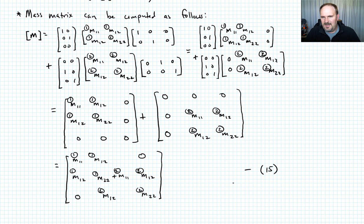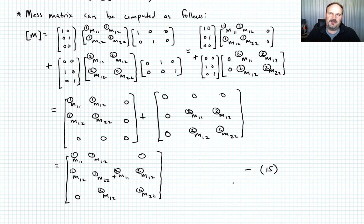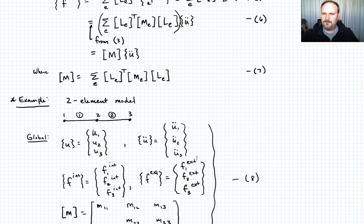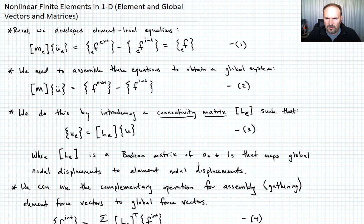This is a simple example, and you probably didn't need this construction to solve it. But it's a general procedure that you can code up pretty easily. As the matrix gets larger, the connectivity matrices are primarily zeros, so in practice this looks more like a lookup table. Now we're left with equation 2 — we know how to compute equation 1 for all elements and assemble them. The next topic will be how we actually solve this global system of equations.